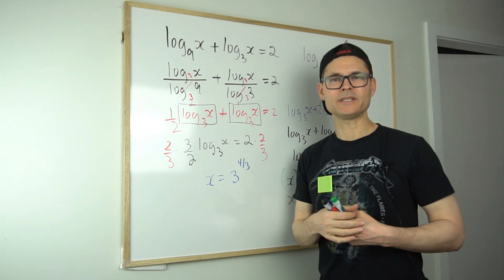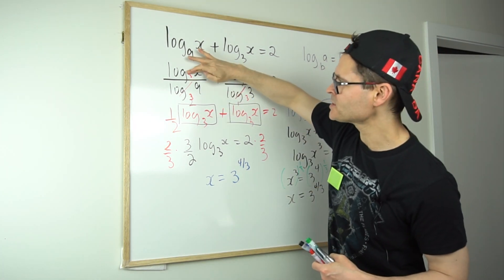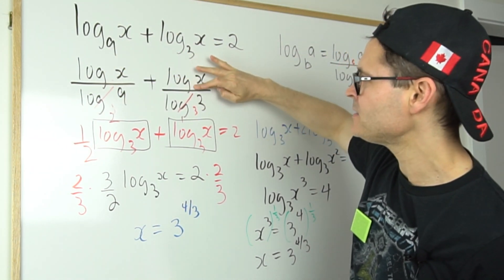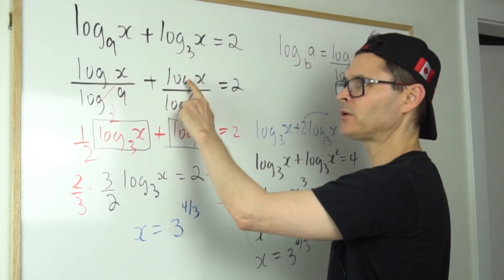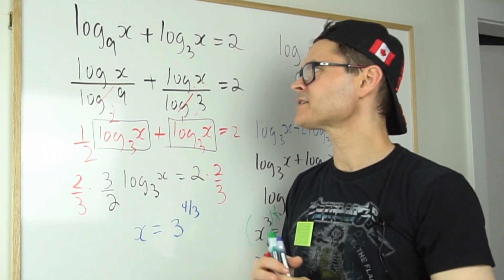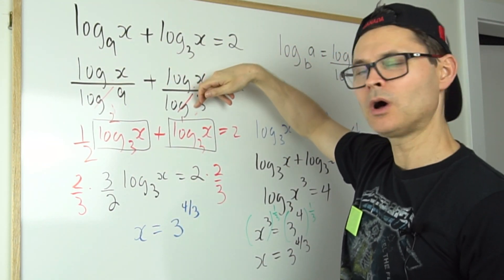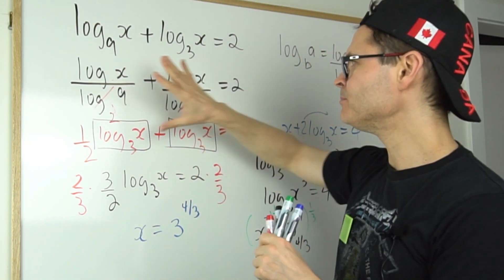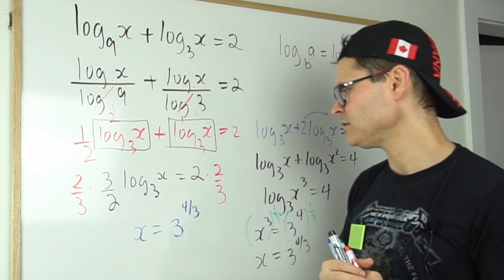And there's another way to do it still. Like in the original sort of adjustment here when I did the change base identity, if I hadn't taken it up, if I hadn't changed it to base 3, then what I could do is factor out a log x. I'll leave this for you to play with. You take out a log x and then you're left with 1 over log 9 plus 1 over log 3, and you could add those together and then play it out that way. It's a little bit more convoluted but you'd still get the same answer.